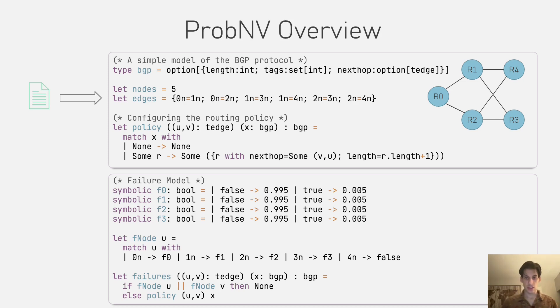The function failures captures what it means for a node to fail. Given a link, if either node at its endpoints has failed, so if the respective symbolic is true, then an empty route is returned, otherwise the policy of the network is applied as usual.